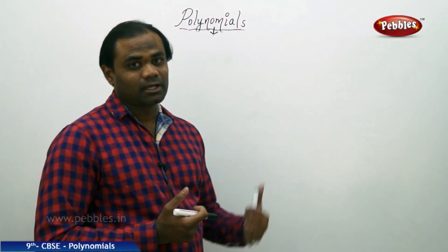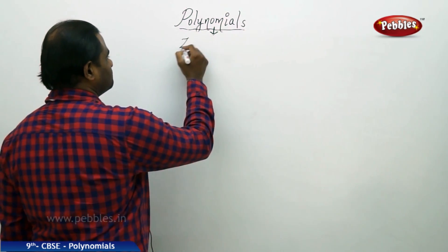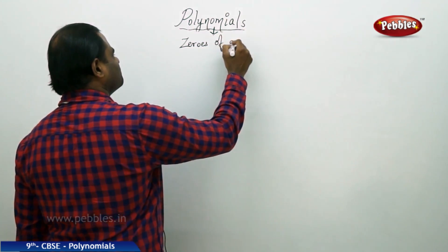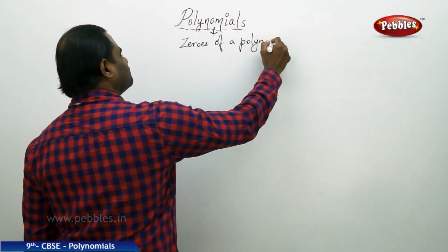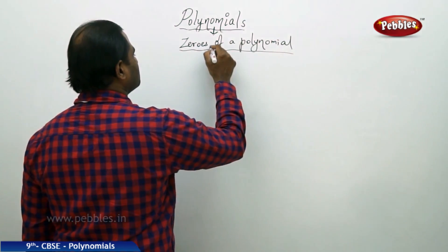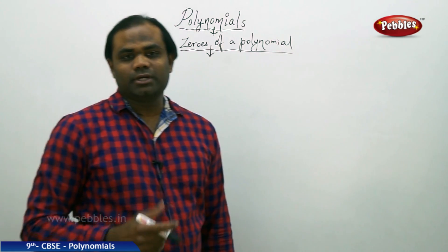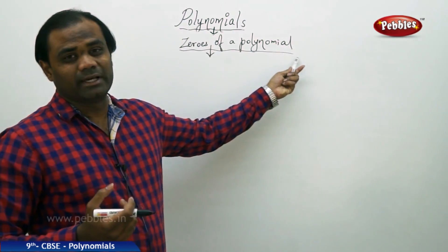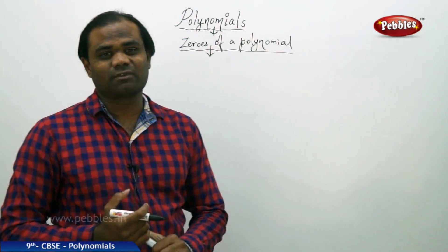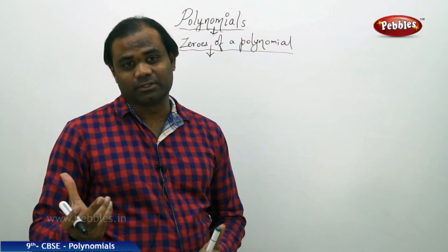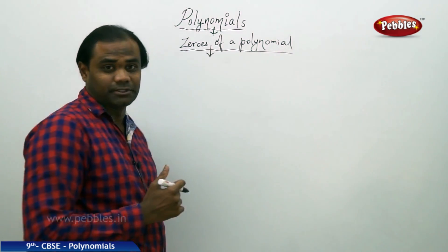The next important definition in the continued session on polynomials is zeros of a polynomial. It is very important to understand this definition. The word zero is central to this topic, and it definitely has to do something with zero. Let's see how the definition comes together more clearly.